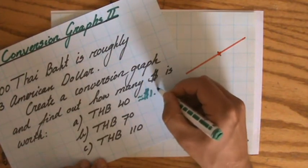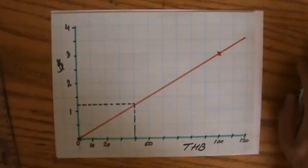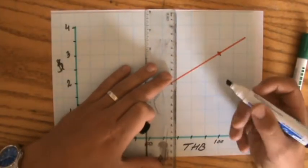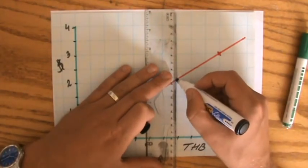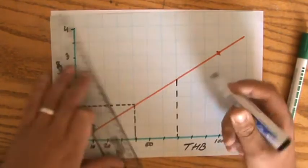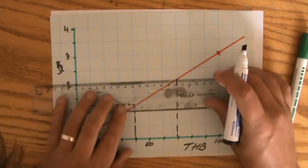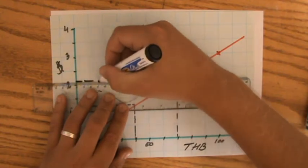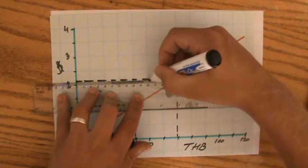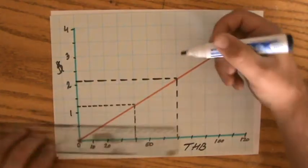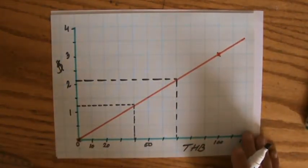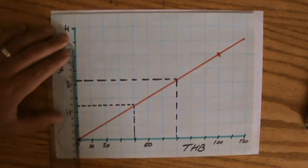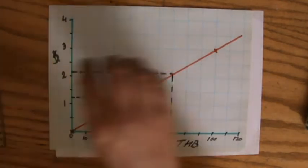What about 70 Baht? I'm gonna do the same thing. So I go to 50, 60, 70. I go up to my graph—and accuracy is important here, so again I emphasize always sharp pencils and rulers. And what is that? It's going to be, check my scale, two dollars and ten cents.